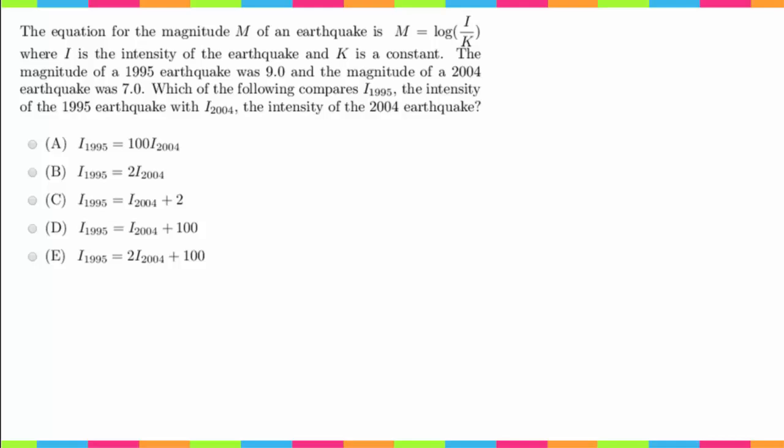Hey guys, what's up, welcome back. Today we are doing number 35 of the MDTP calculus readiness test. The question says the equation for the magnitude M of an earthquake is M equals log of I over K, where I is the intensity of the earthquake and K is a constant.